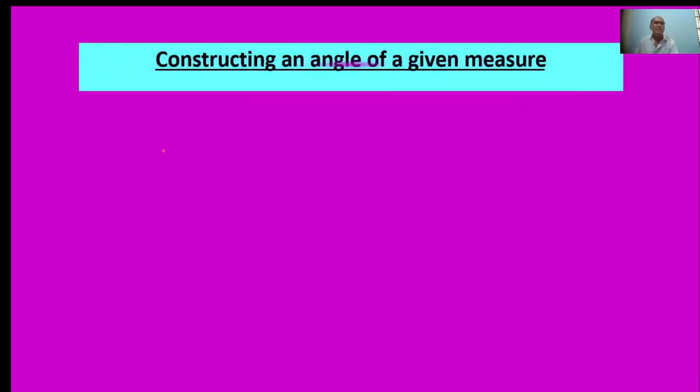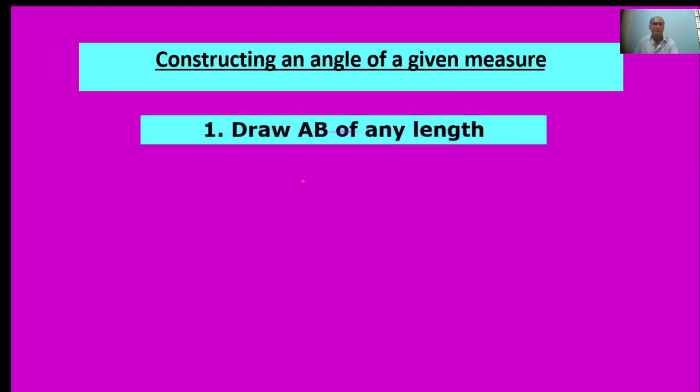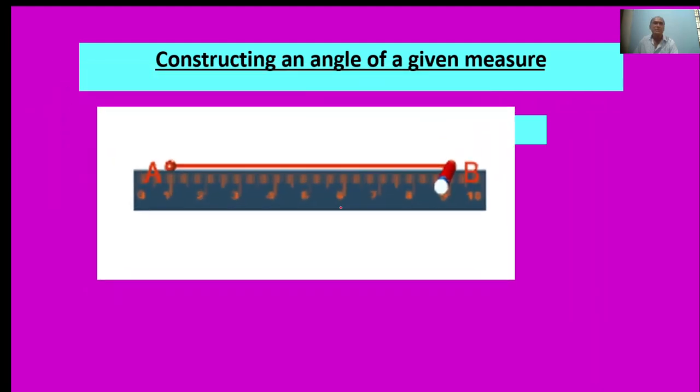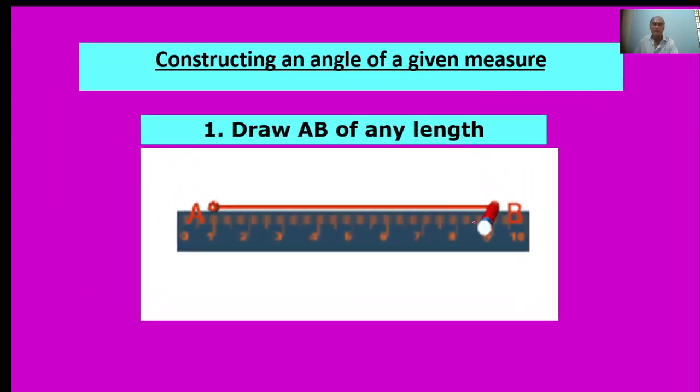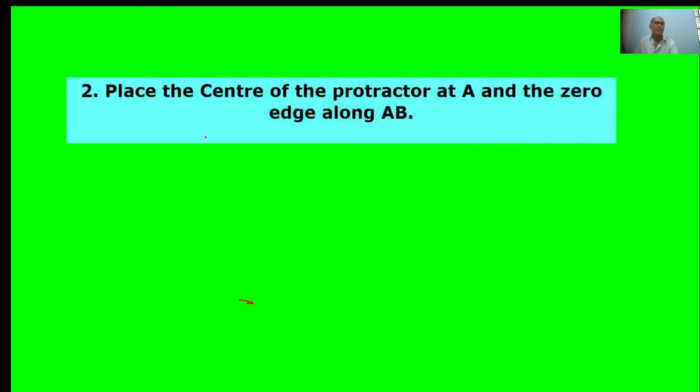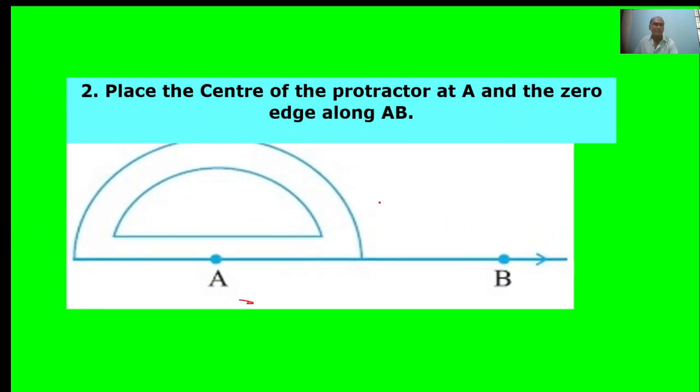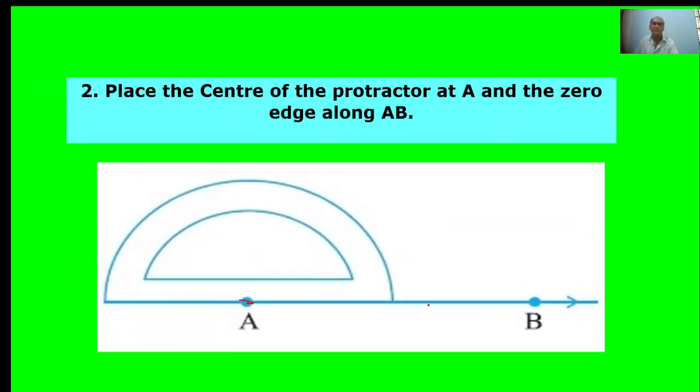Next: Constructing angles of given measures. First of all, draw AB of any length. Draw AB any length. Second point: Place the center of the protractor at A and the zero edge along B. Here, A. Pick zero. This is the protractor edge.